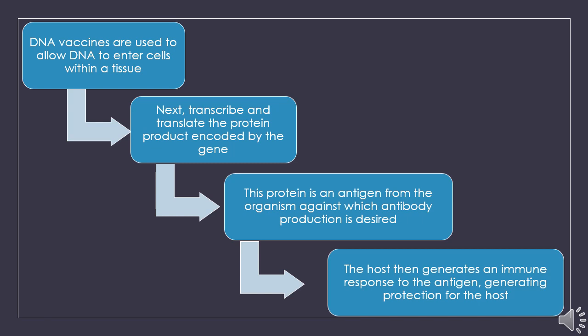In summary, the DNA vaccine is introduced into the body and allowed to enter the cells within the appropriate tissue. There will then be transcription and translation of the protein product encoded by the gene, and this protein is an antigen from the organism against which antibody production is desired. The host then generates an immune response to the antigen, generating protection for the host.